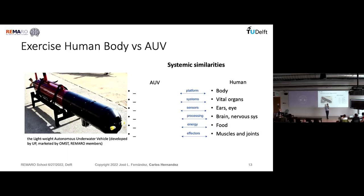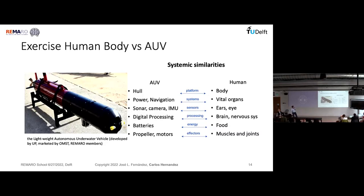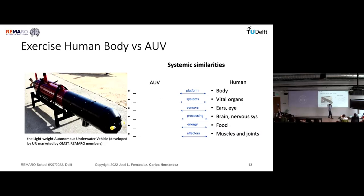You can think of the body as the physical platform. From maritime expertise, someone tells us it is the hull. Then we have vital organs — we can think of those as the subsystems. We may have electronics. What other subsystems does an underwater vehicle have? Sensors, for example, could be the ears and eyes.